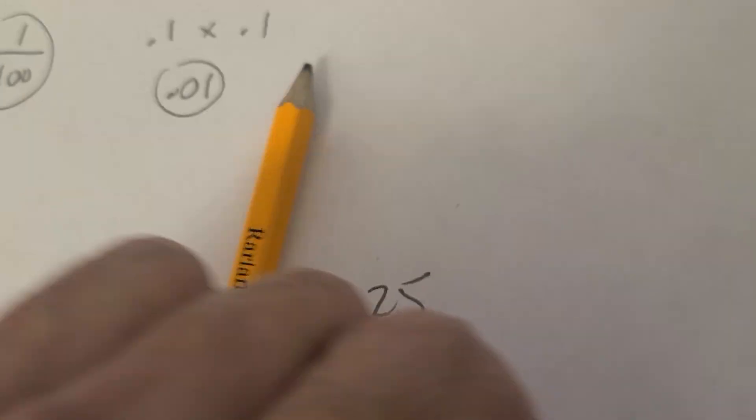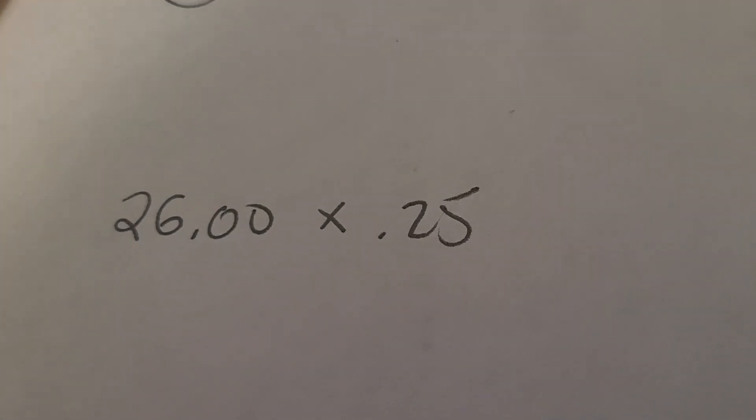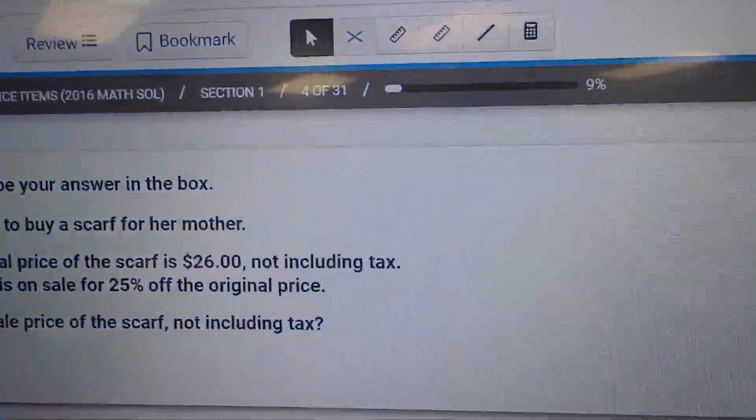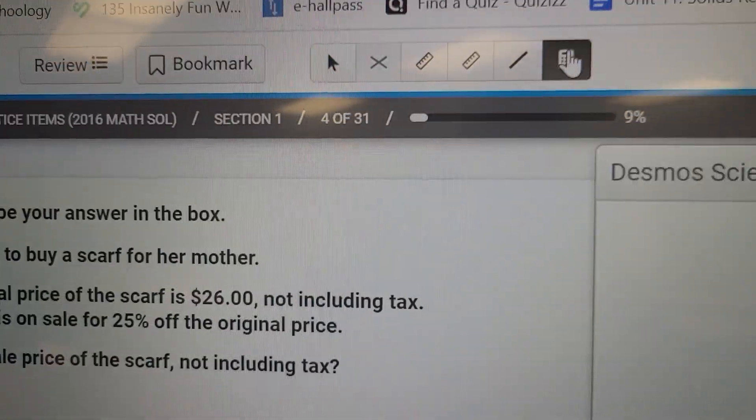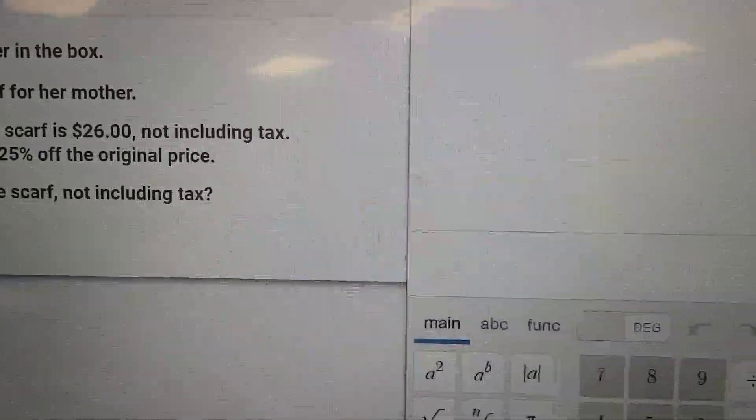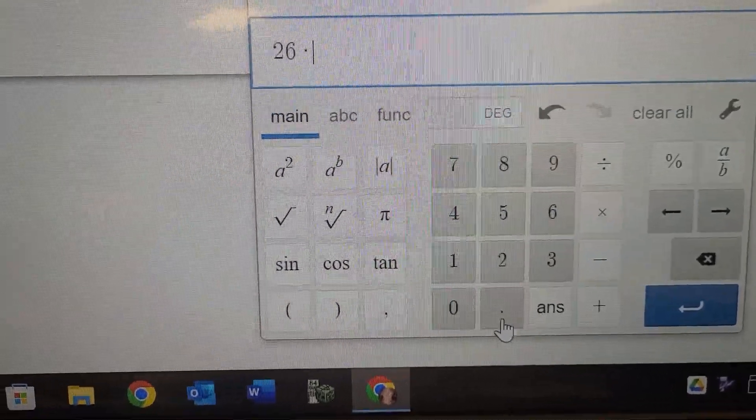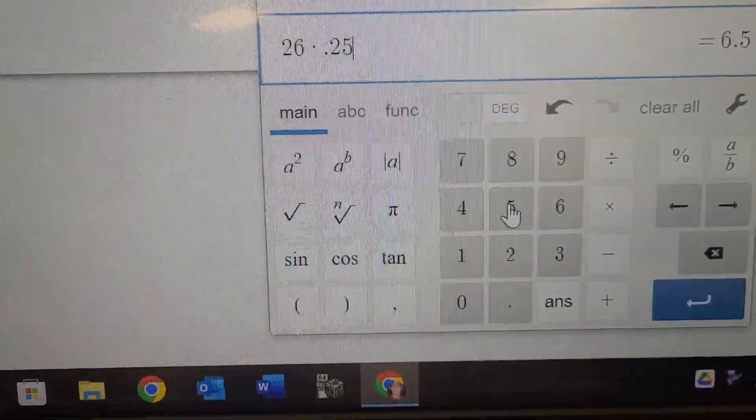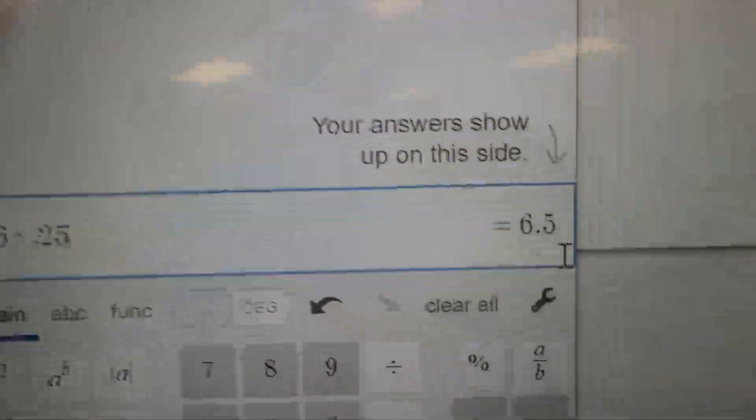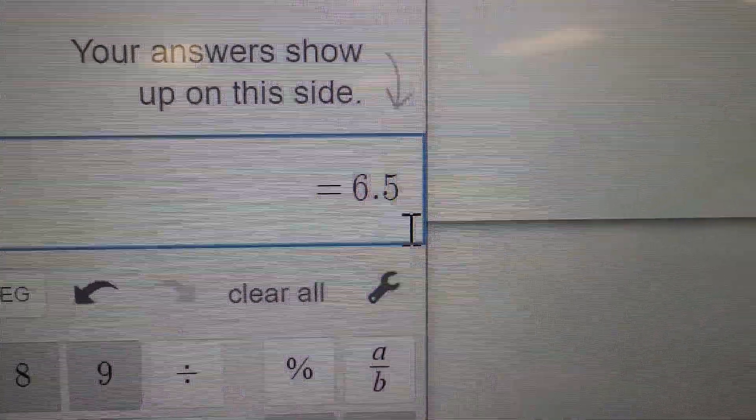On my scrap paper, I'm going to write $26 × 0.25. I don't know what that is, so I'm going to go to my calculator. I'm going to go 26 times 0.25 and I'm going to get my answer, which is 6.5. $6.50 when you talk about money.